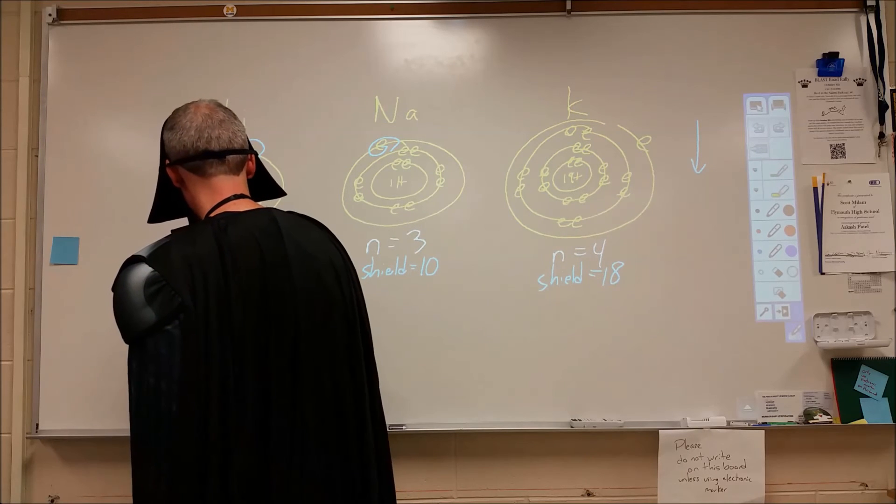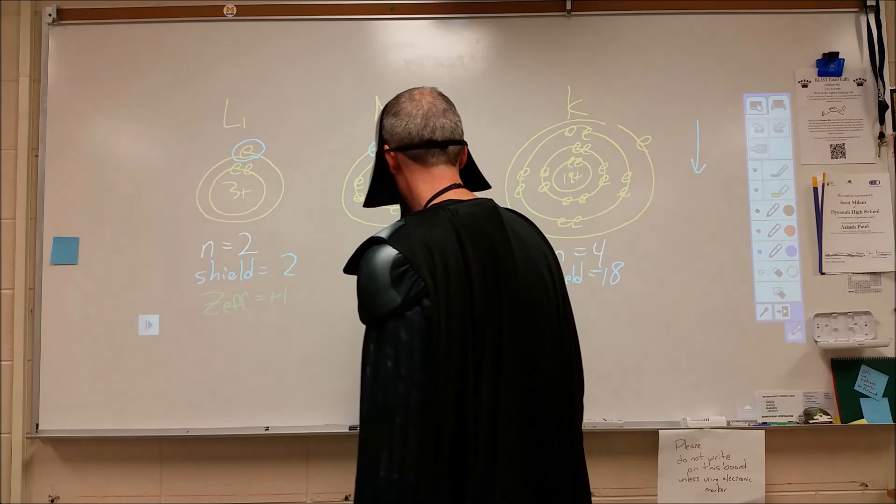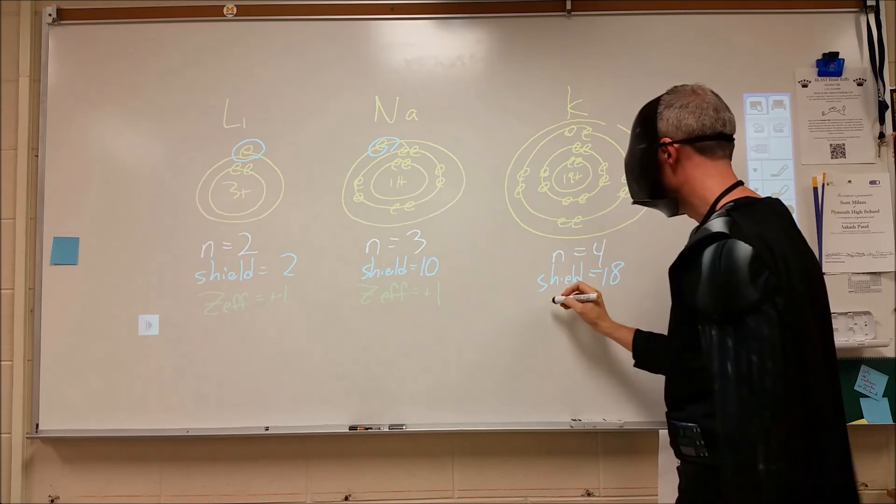So let's look at our effective nuclear charge for the total. So we have three protons, two electrons, our effective nuclear charge is plus one. Here we have 11 protons, 10 shielding electrons for an effective nuclear charge of plus one.